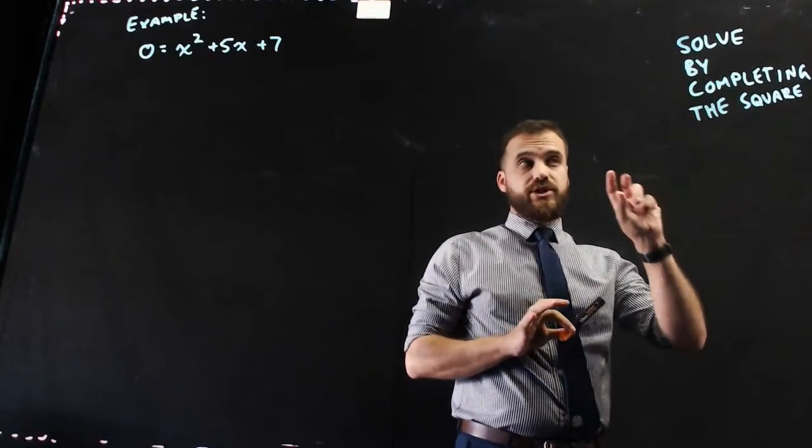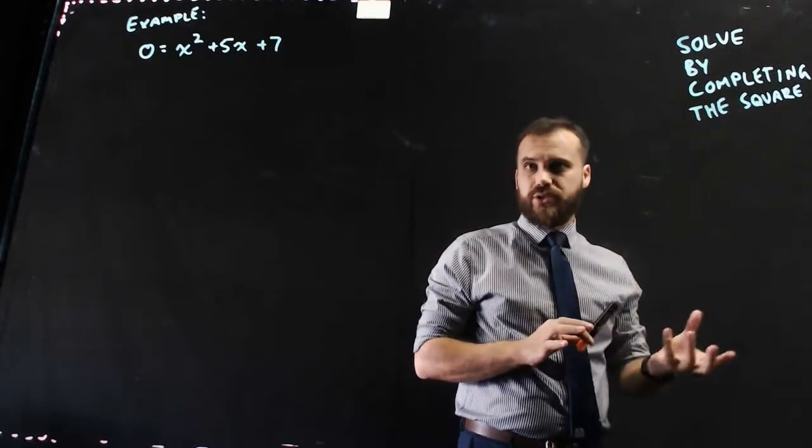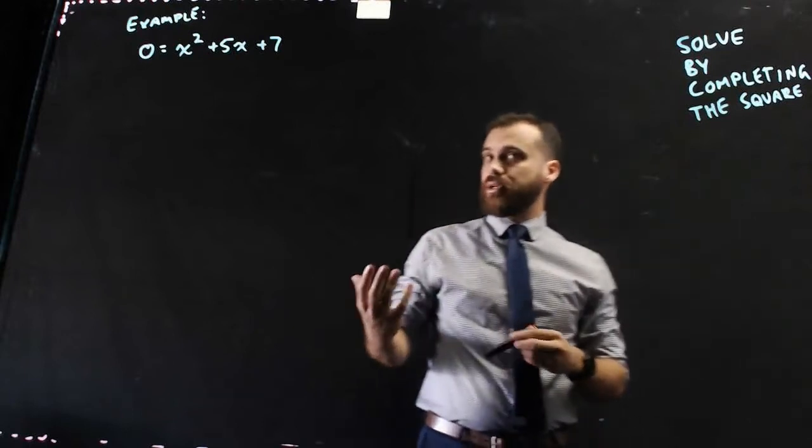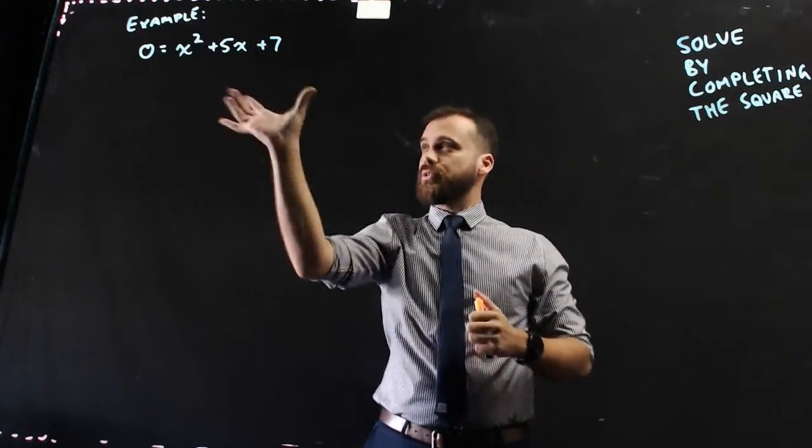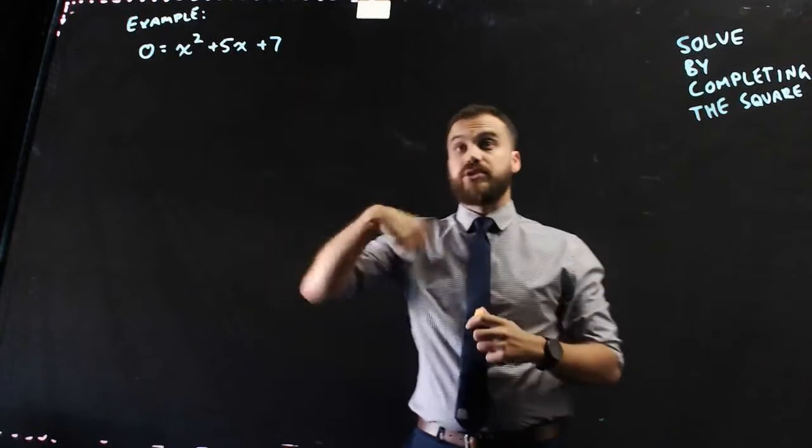Alright, so this time we're going to be solving by completing the square. We already know how to complete the square, but what if we had something like 0 equals this quadratic, and we wanted to solve it?